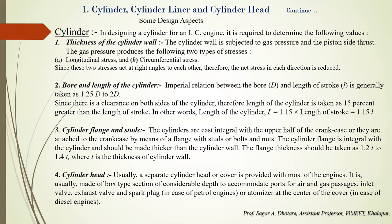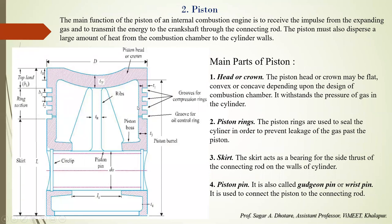Fourth design aspect: the cylinder head. Usually, a separate cylinder head or cover is provided in most engines. It is usually made of a box-type section of considerable depth to accommodate different ports for air and gas passages — that is, inlet and exhaust valves plus spark plug. Materials used for the cylinder head include grey cast iron, alloy cast iron with nickel-chromium, and nickel-chromium-molybdenum cast steel.